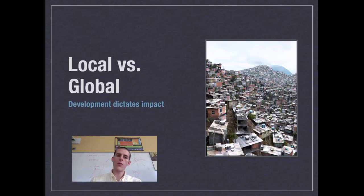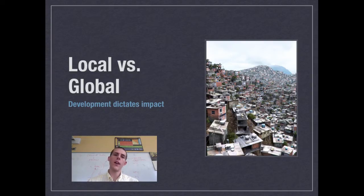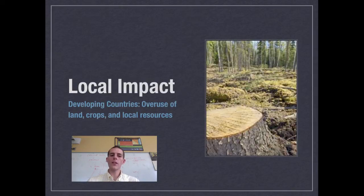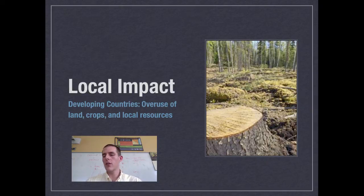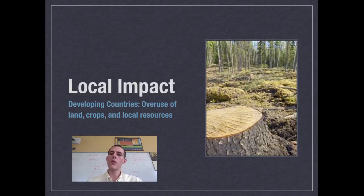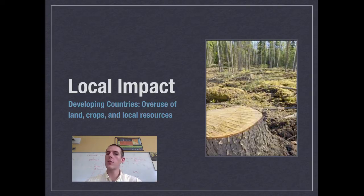Now let's talk about local versus global impacts — basically the scale of impact a country has on the environment. Most developed countries have a global environmental impact, while most developing countries have a local environmental impact. Developing countries get everything they need from their immediate surroundings or neighboring countries. They're not importing goods from across oceans or other continents and don't have much infrastructure. So their environmental impacts include overuse of land, crops depleting soil, local resources being depleted, and waterways being polluted — all in their quest just to get by.